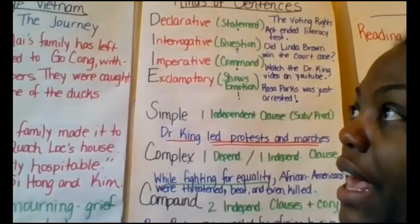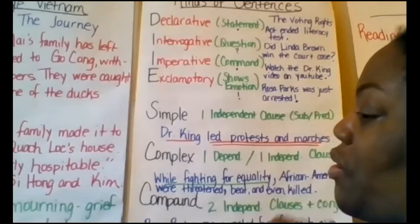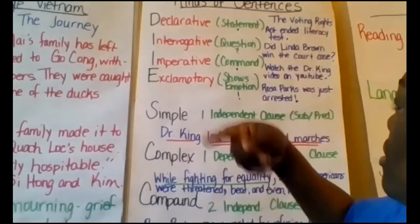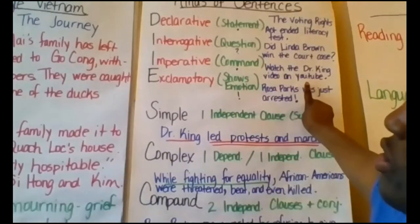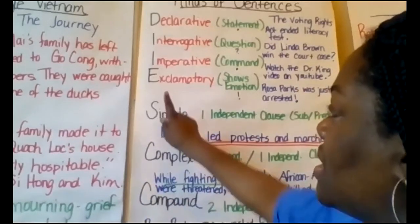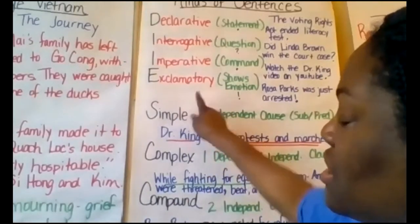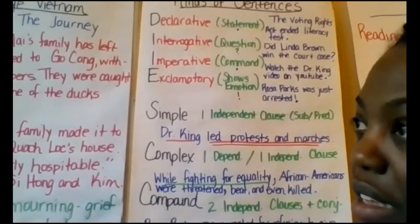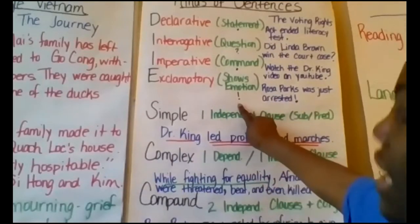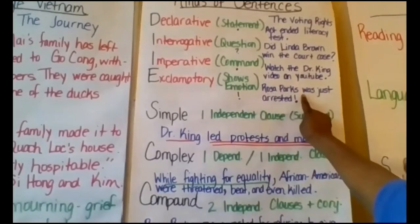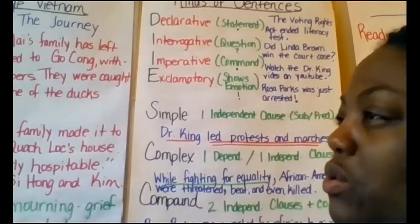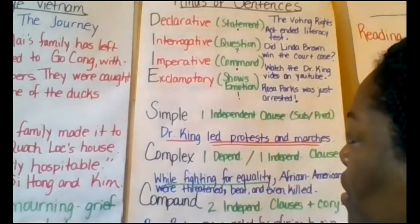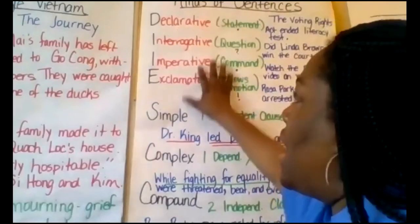Imperative is a command — it's a bossy sentence. Your parents and teachers like to give bossy sentences. For example: 'Watch the Dr. King video on YouTube' — that's giving a command. An exclamatory sentence, which is my personal favorite, shows emotion and ends in an exclamation mark. 'Rosa Parks was just arrested!' — that shows exciting emotion.